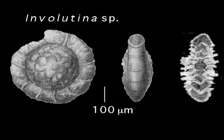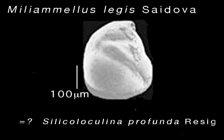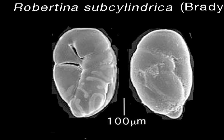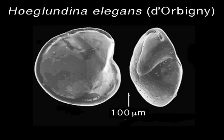The aragonite test of the Involutinida consists of two chambers — the second a tube coiled around the first, with the umbilical area of one or both sides generally filled by pillars. The Silicoloculinida have a siliceous test, and their representatives are found only at abyssal depths. The Robertinida are aragonitic, and the several families have internal chamber partitions in several discrete forms of tests resembling those of the Buliminida and low-spired Rotaliida.